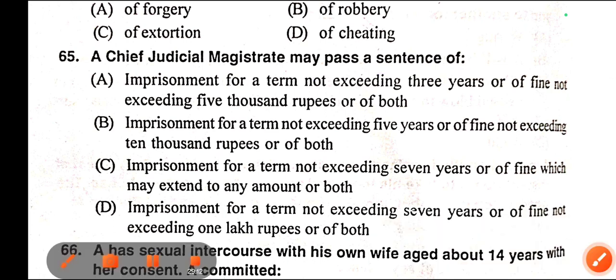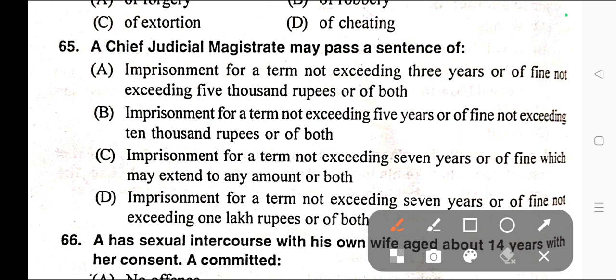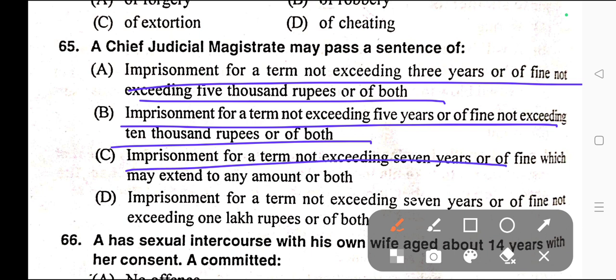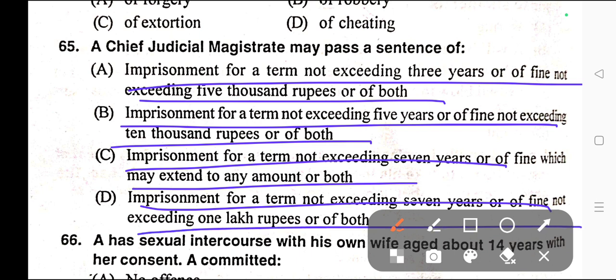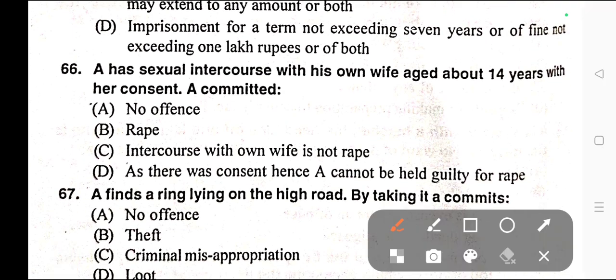Question number sixty-five: A Chief Judicial Magistrate may pass the sentence of — A) Imprisonment for a term not exceeding 3 years or a fine not exceeding Rs. 5000, or both, B) Imprisonment for a term not exceeding 5 years or a fine not exceeding Rs. 10,000, or both, C) Imprisonment for a term not exceeding 7 years or a fine which may extend to any amount, or both, D) Imprisonment for a term not exceeding 7 years or a fine not exceeding a specified amount, or both. Correct answer is option C — imprisonment not exceeding 7 years or a fine which may extend to any amount, or both.